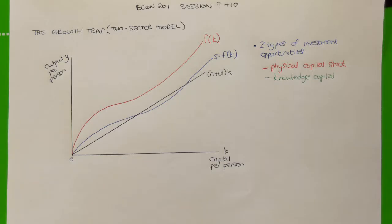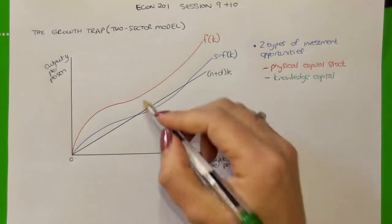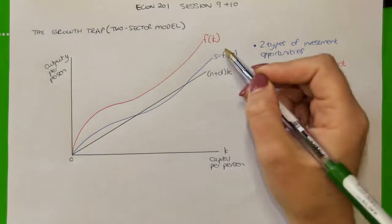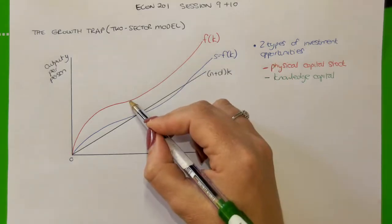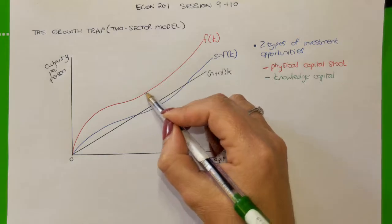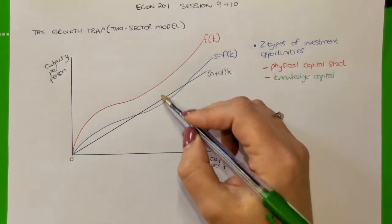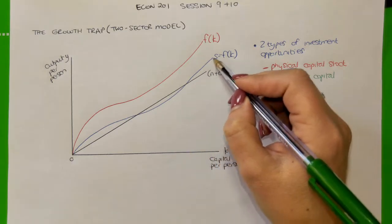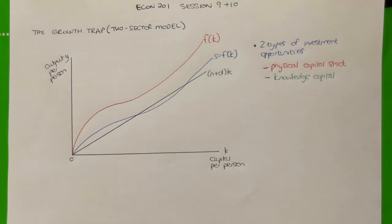With knowledge capital, the production function will no longer exhibit diminishing marginal returns but rather constant returns. This is where we see the production function moving to take a more positive slope — that's the endogenous growth theory part of the production function. Similarly, the savings function follows the shape of the production function, and so the savings function also takes on a constant slope for the part of the model representing endogenous growth theory.